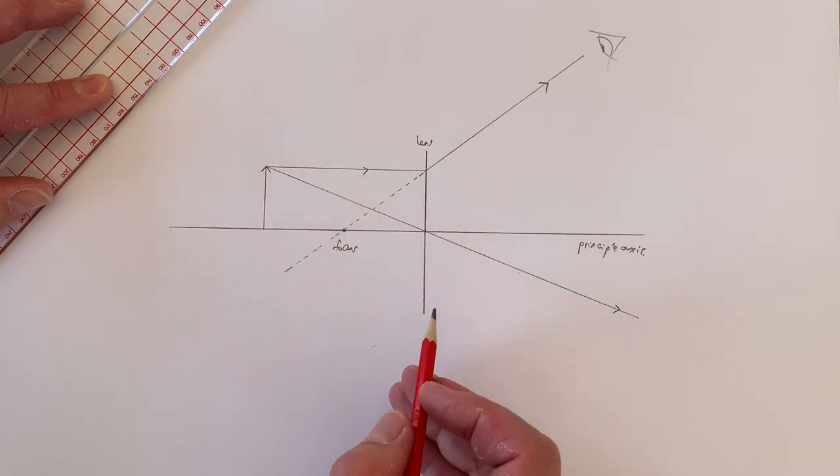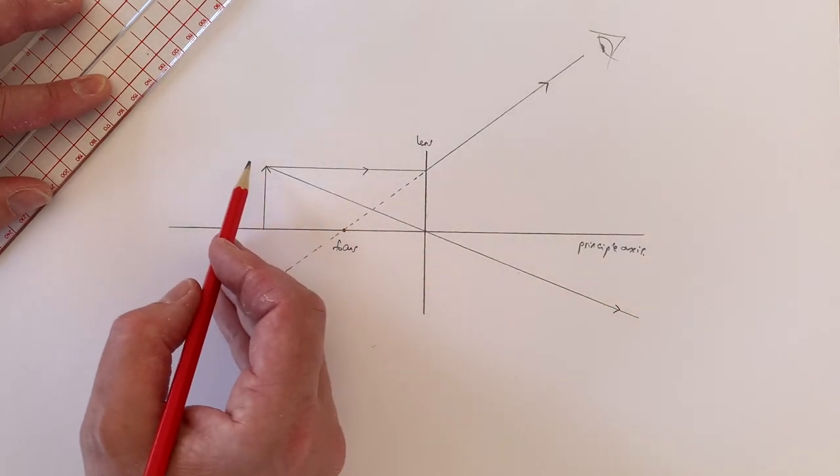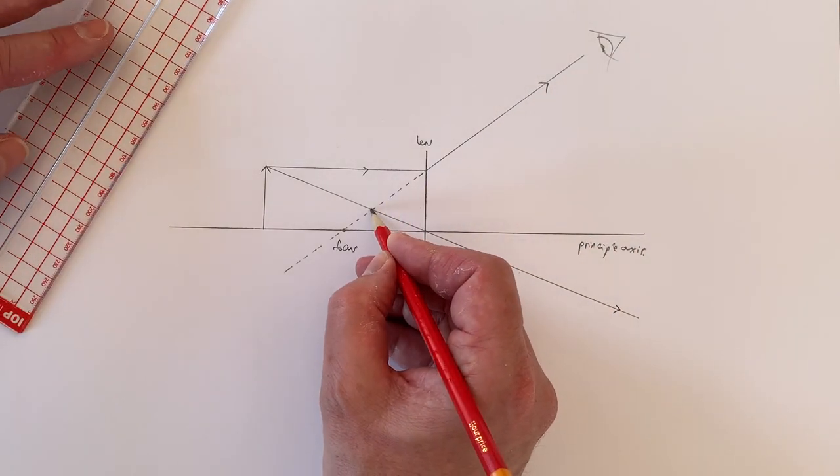When we do this, we can see that the ray through the centre of the lens and this ray both cross at a point here.